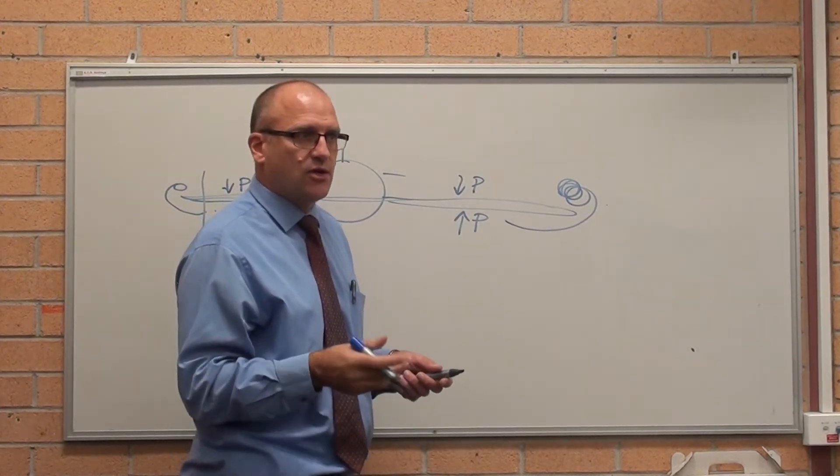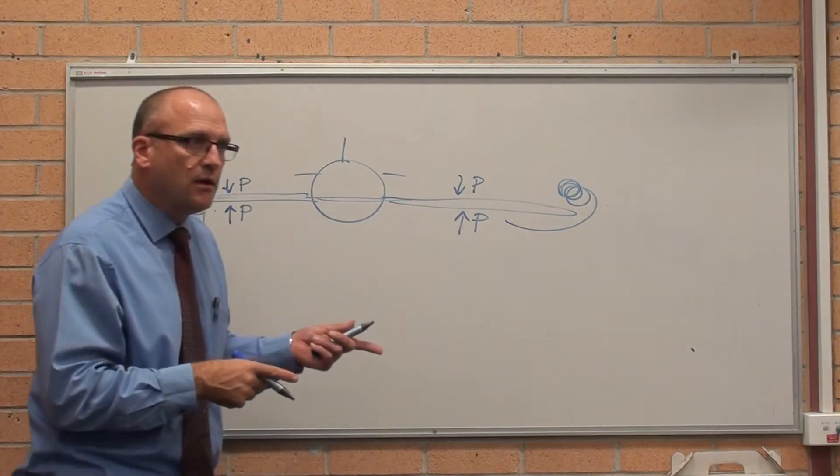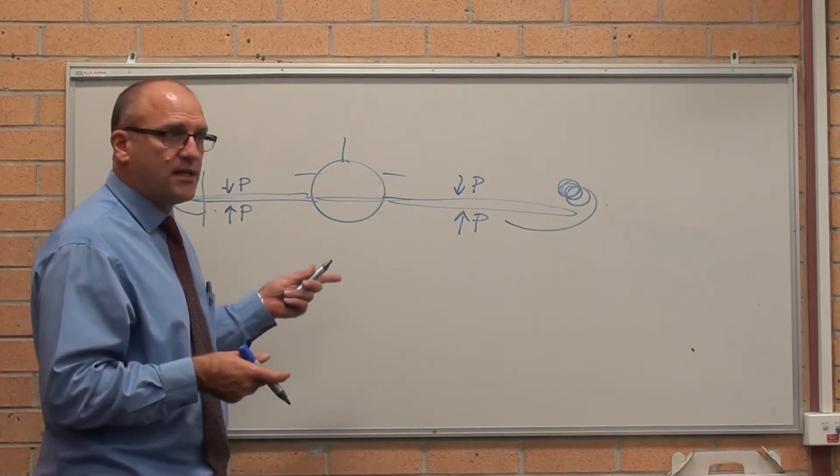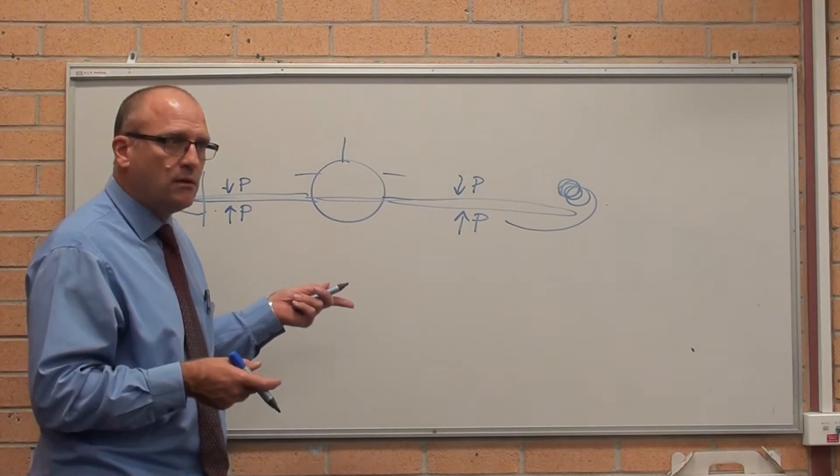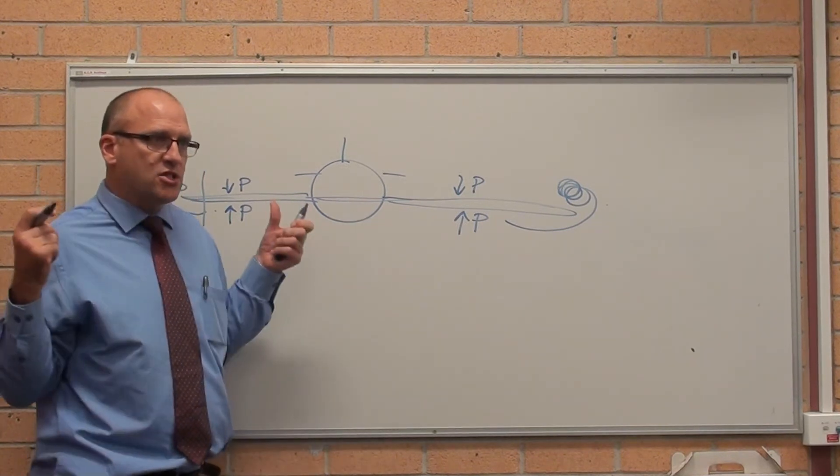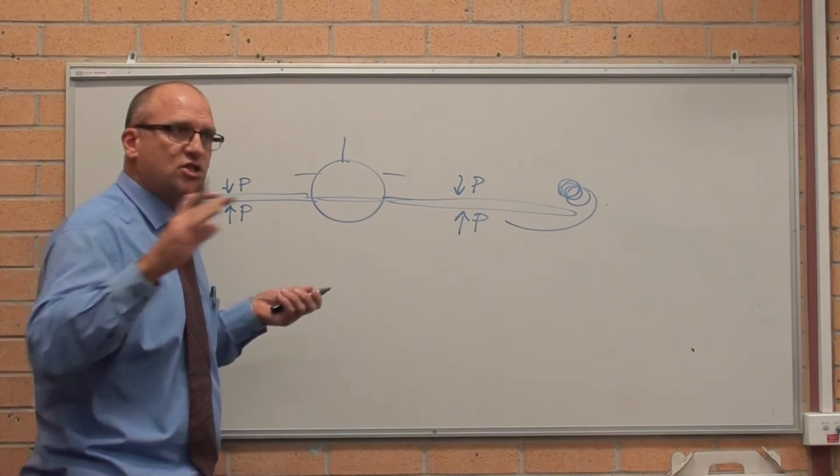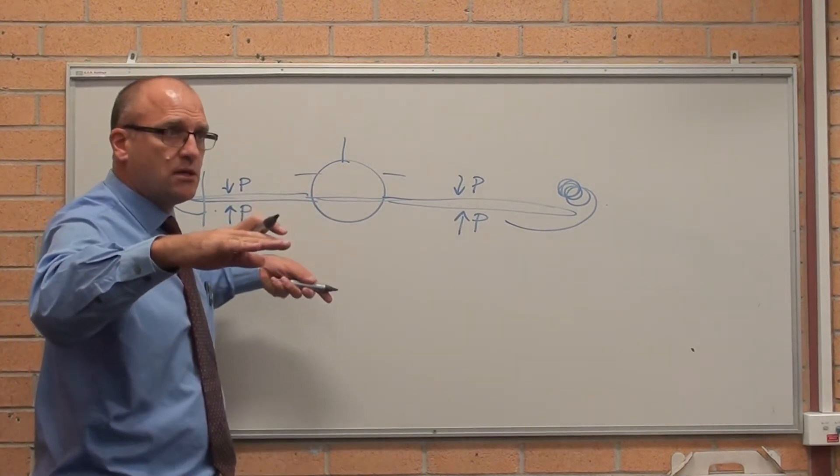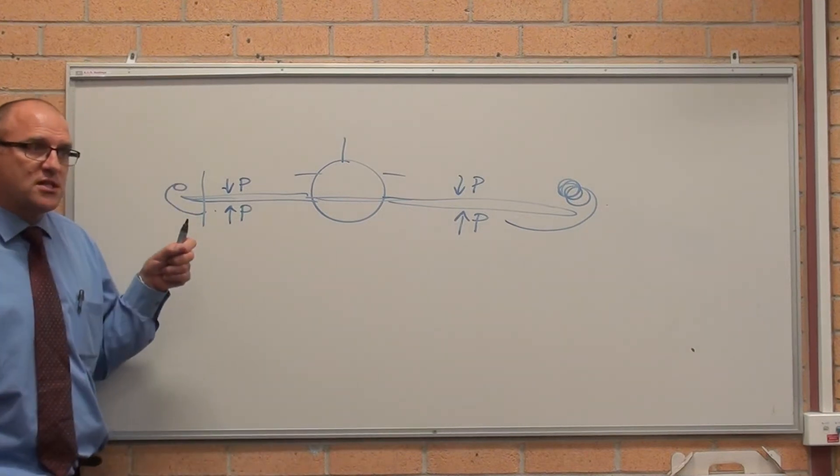If you Google wingtip vortices, don't do it now, I'll put it up on the screen, you'll see exactly what they look like. They are massive. That is a massive cause of drag. Drag is turbulence behind the plane. The smoother it shoots through the air, glides through the air, the less air disturbance, the less vacuum that's sucking the plane back.